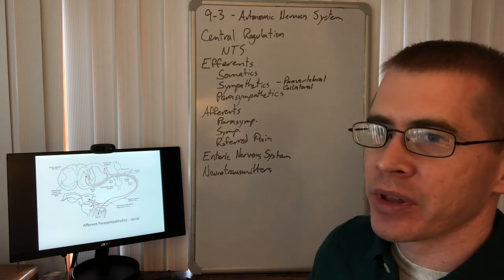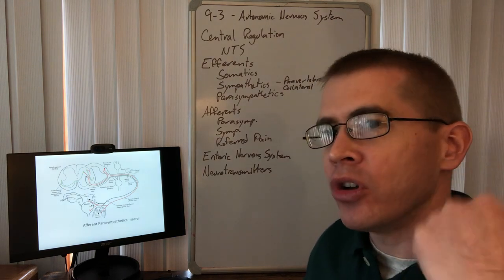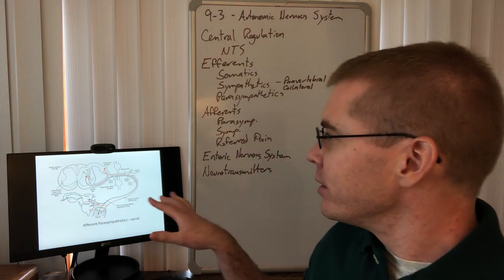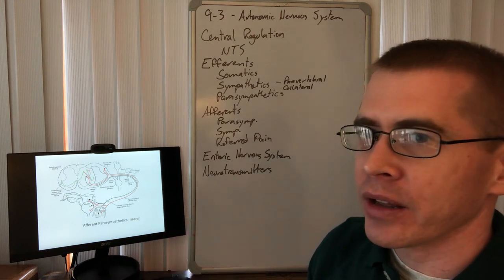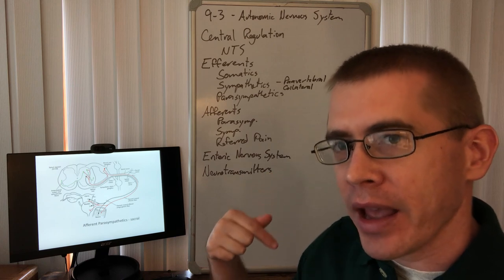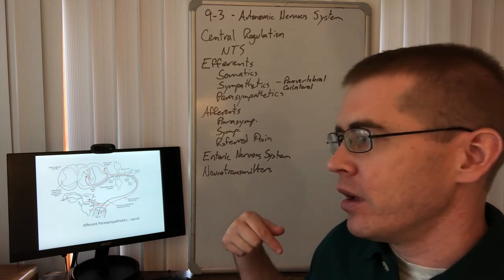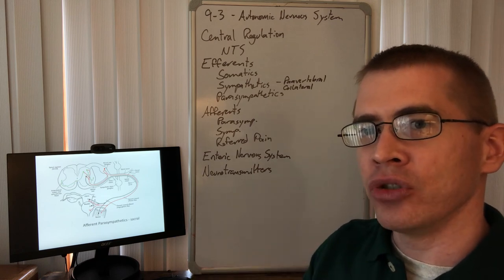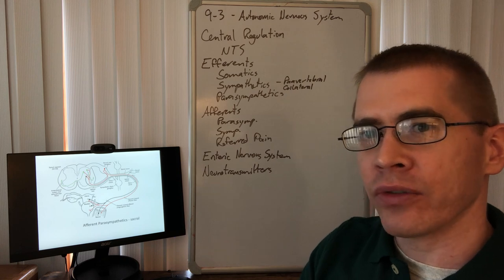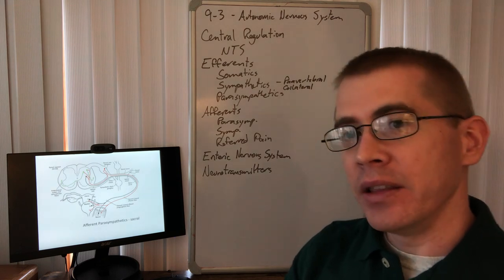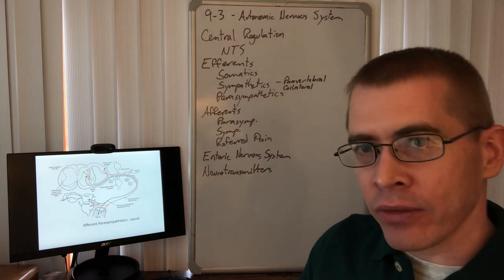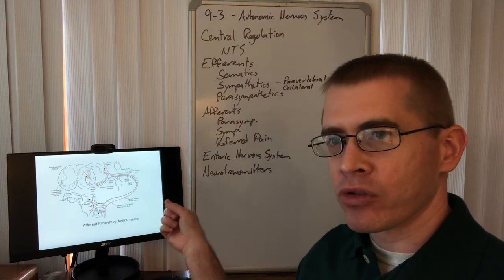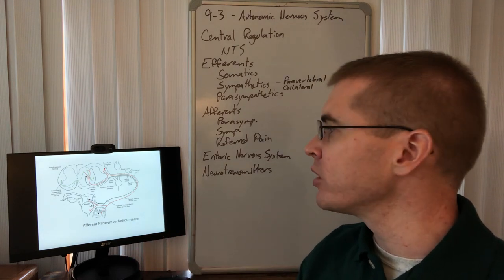But there are parasympathetic afferents not just in the brainstem, but also in the sacrum. So the sacral afferent parasympathetics, there are parasympathetics in two places, the brainstem and the sacral spinal cord, because if you'll recall, vagus nerve only innervates down to the left colic flexure, the splenic flexure of the colon. The descending colon and the pelvic organs, the pelvic viscera, are all innervated by sacral parasympathetics. So the afferents go to the sacral spinal cord as well.